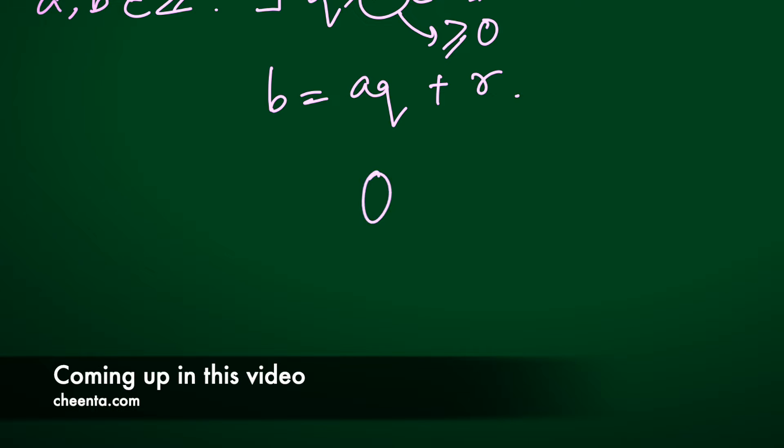Look at the AP: 0, and this is what we call a two-sided AP. It extends to infinity on both sides. Minus A, minus 2A.